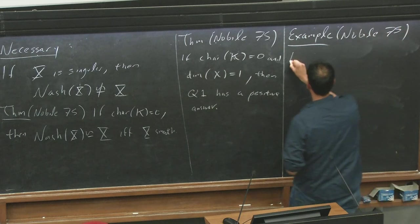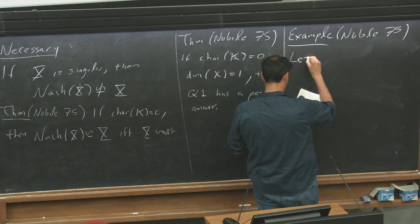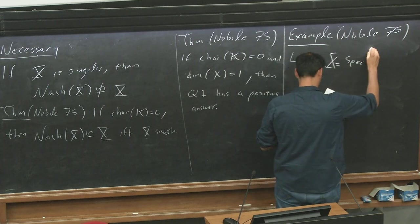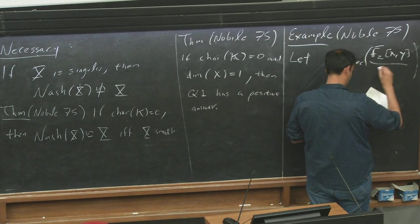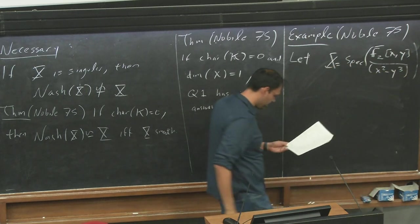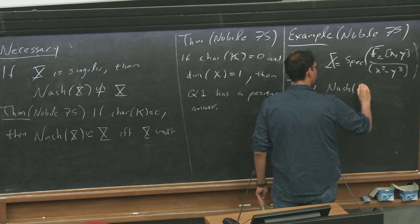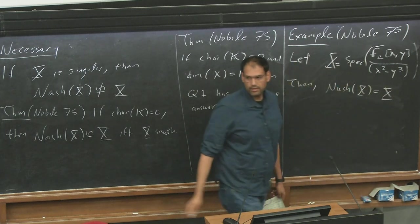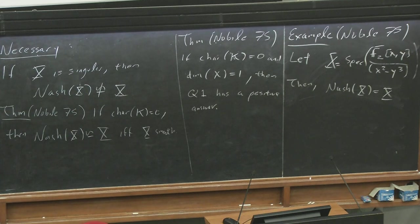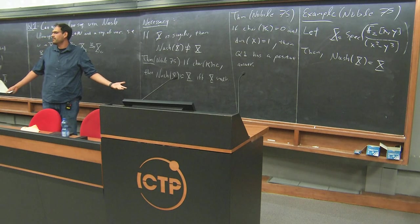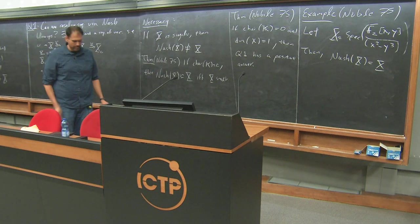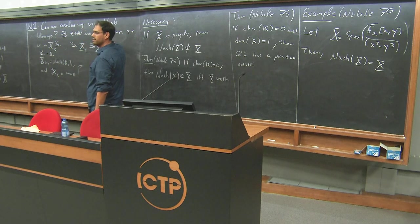Same paper, in prime characteristic, let x be the spec of F2 xy over x squared minus y cubed. So we take the cusp in characteristic 2. Then the Nash Blow-up of x is equal to x. So Nash Blow-up does nothing to this curve in prime characteristic. And this was one of the first papers, or maybe the second paper on Nash Blow-ups. And when you come to this example, so one may think there is no point in thinking about this in prime characteristic. And then most of the work in, like, 40-something years was trying to get results at least in characteristic 0.